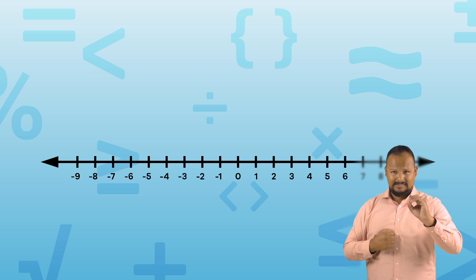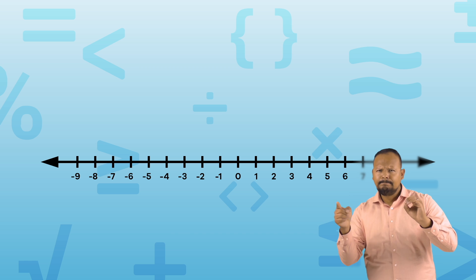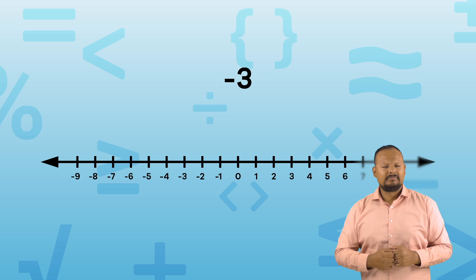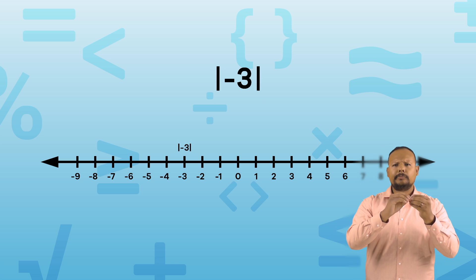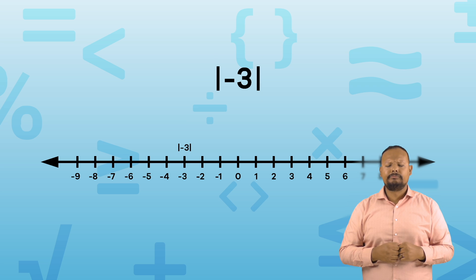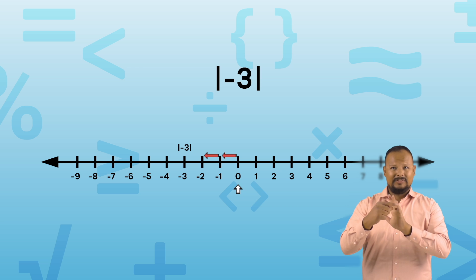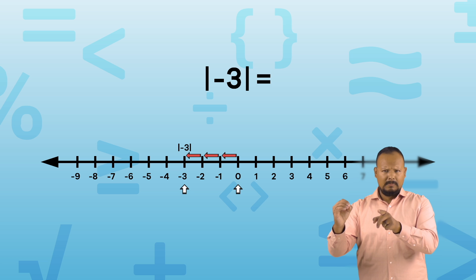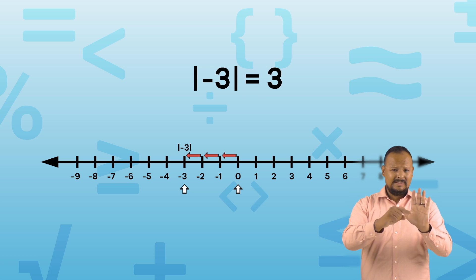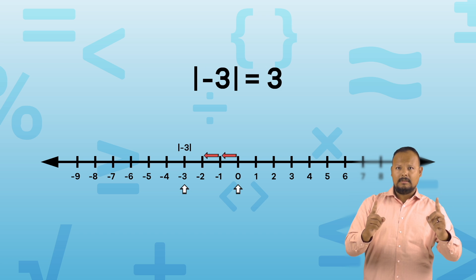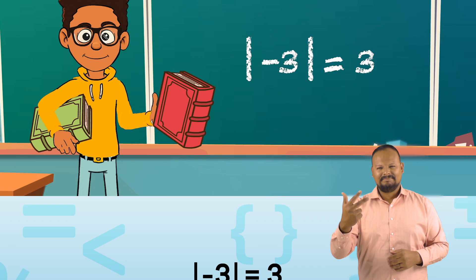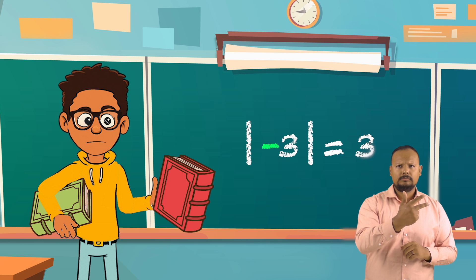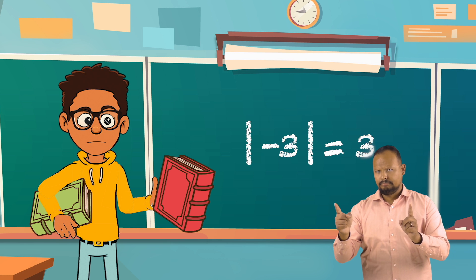What about the absolute value of a negative number? Let's take a look at what happens when the negative symbol is inside the absolute value bars. If we count the distance, or units, from 0, we can see that the absolute value of negative 3 equals 3, because negative 3 is 3 units away from 0. If the negative symbol is on the inside of the absolute value bars, the value becomes positive.